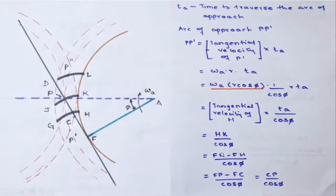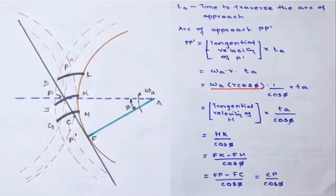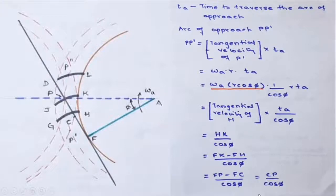This term becomes hk / cos(phi), which can be written as (fk − fh) / cos(phi). This can be further written as (fp − fc) / cos(phi). The reason is that arc fk equals fp, since point p is on the generator fp that rolls on the base circle to generate the involute pk. Similarly, arc fh equals fc. So fk is written as fp and fh as fc, giving us cp / cos(phi). This is the expression derived for the arc of approach.